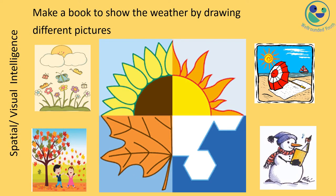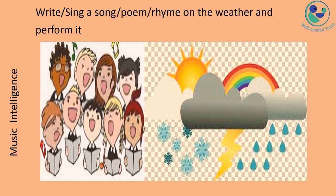For spatial and visual intelligence, ask students to make a book to show the weather by drawing different pictures. You can ask them to draw different kinds of weather and related activities, so students can create different activities related to each type of weather.